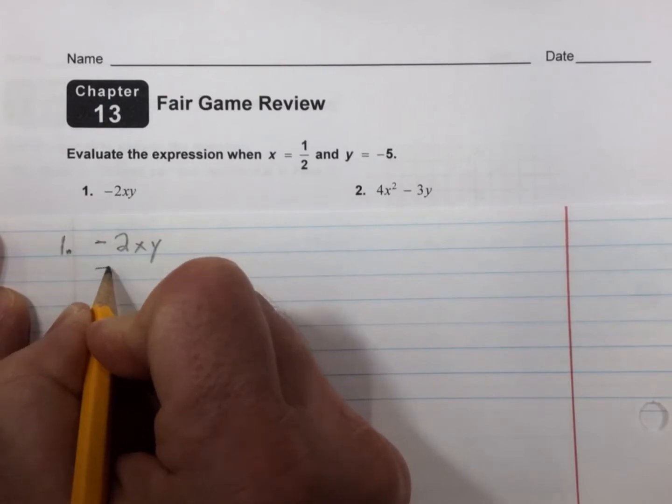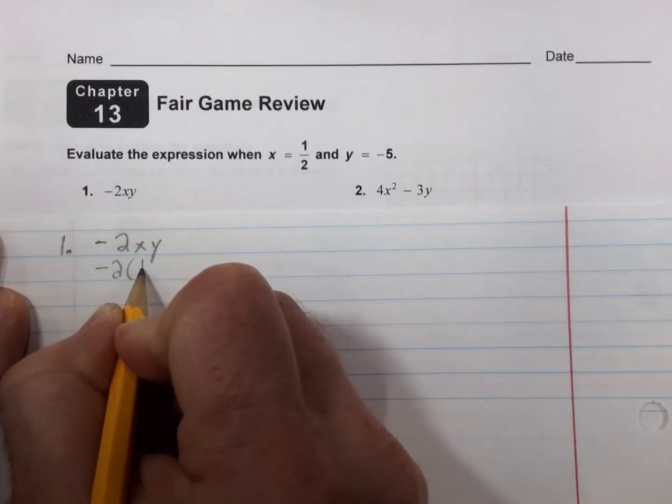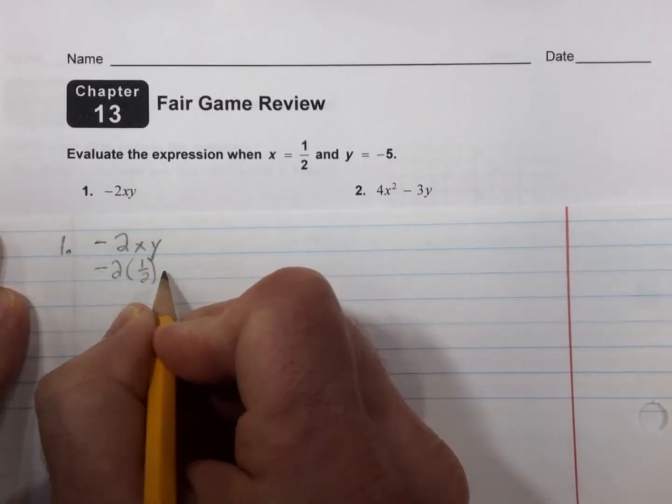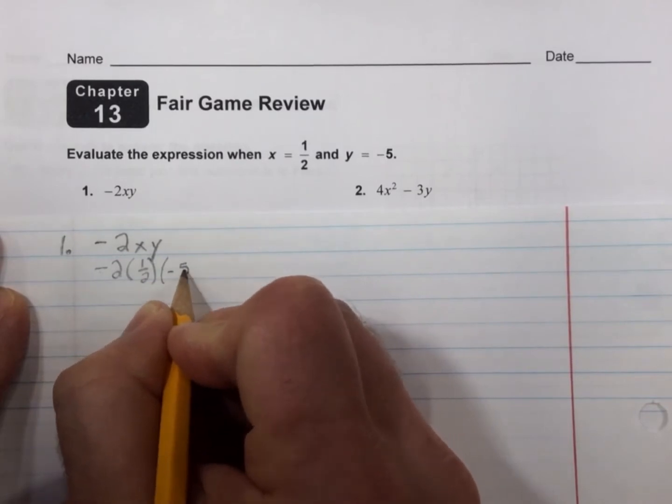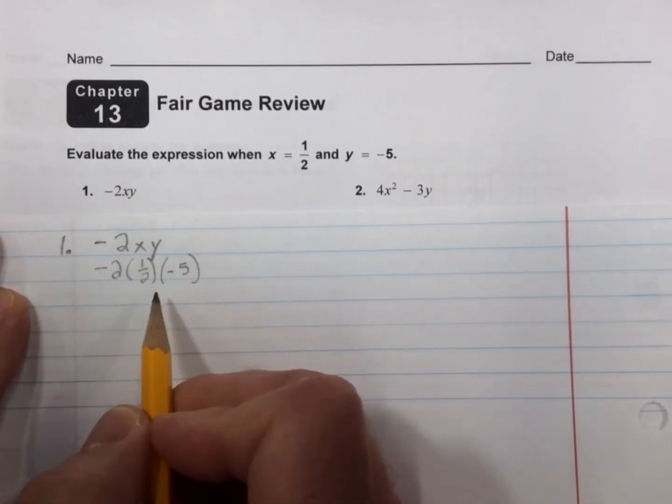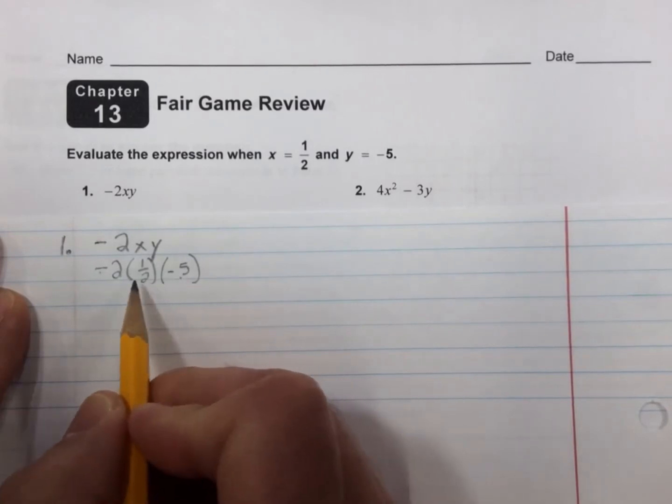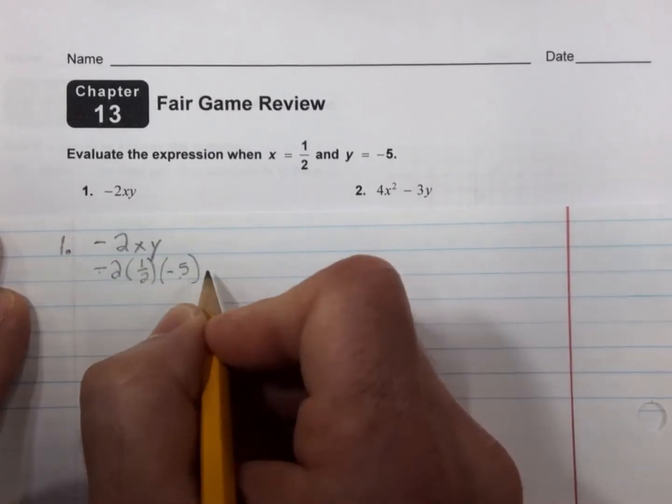We'll put 1/2 in for x and -5 in for y. We can multiply these in any order. -2 times -5 is a positive 10. And half of positive 10 equals 5.